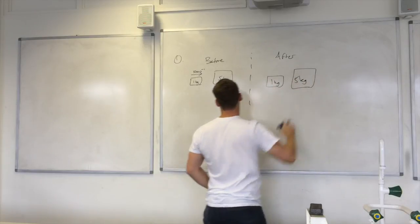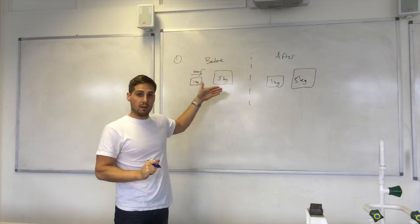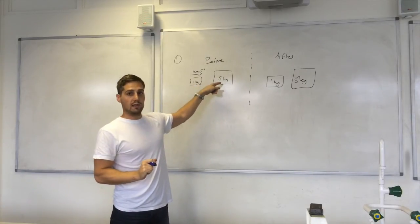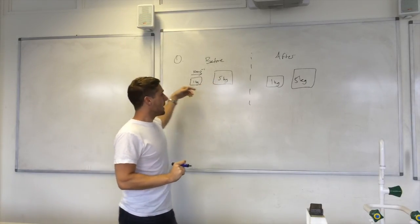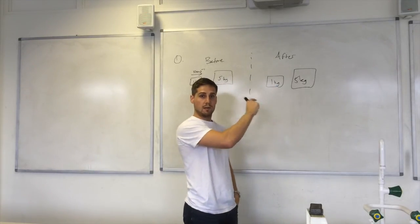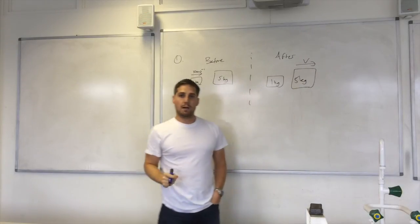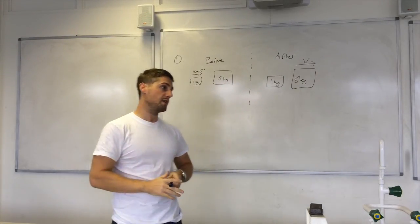Okay, so we've got one kilogram mass coming in at ten metres per second to the right towards this five kilogram mass and then afterwards the one kilogram mass becomes stationary.